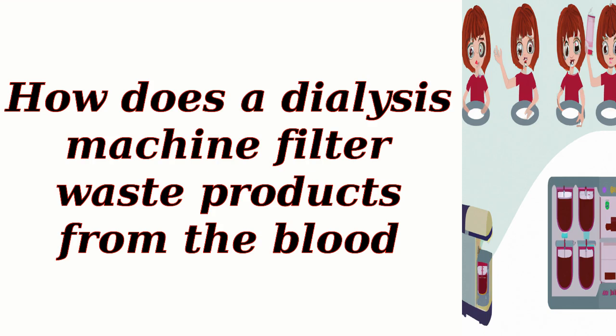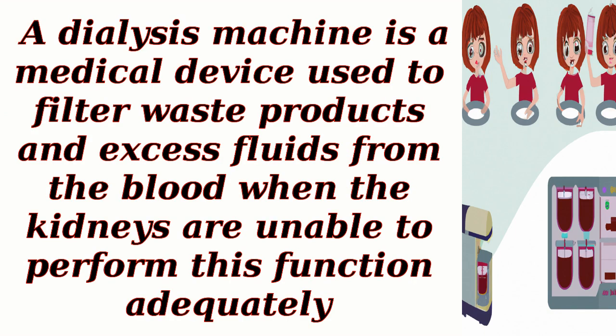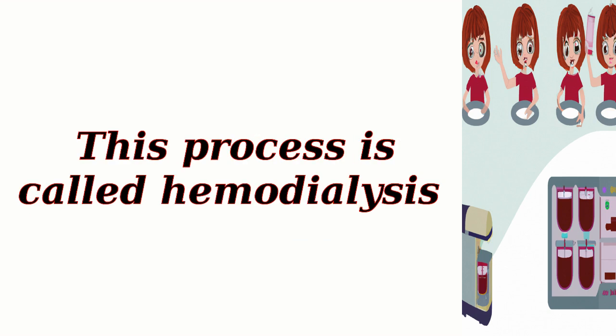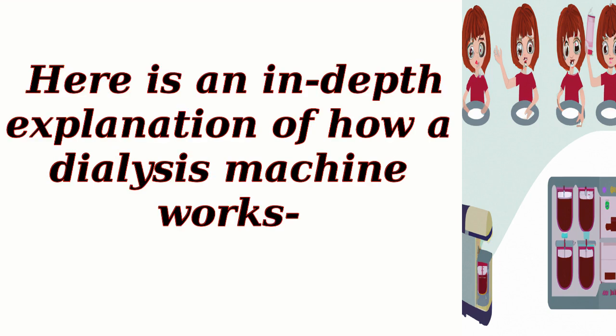How does a dialysis machine filter waste products from the blood? A dialysis machine is a medical device used to filter waste products and excess fluids from the blood when the kidneys are unable to perform this function adequately. This process is called hemodialysis. Here is an in-depth explanation of how a dialysis machine works.